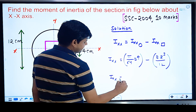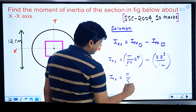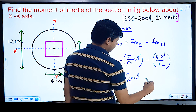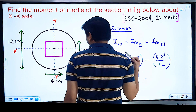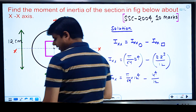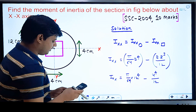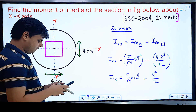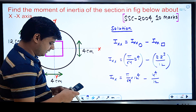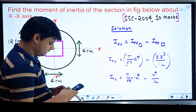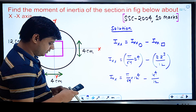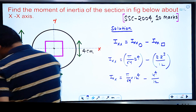Now putting in values: moment of inertia about x-axis = π/64 × D⁴ − B⁴/12. The circle diameter D = 12 cm, and the square side B = 4 cm. So: π/64 × 12⁴ − 4⁴/12. Calculating this gives a final value of 996.54.